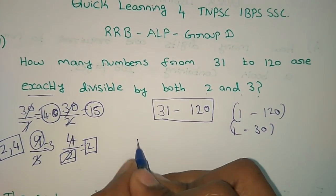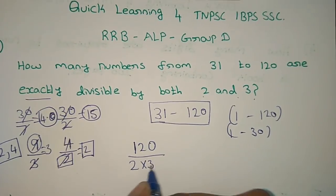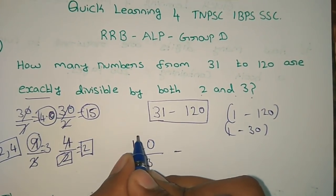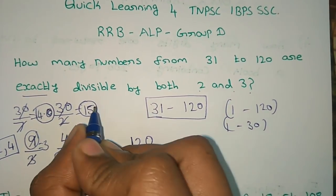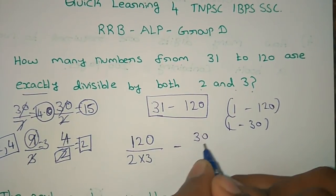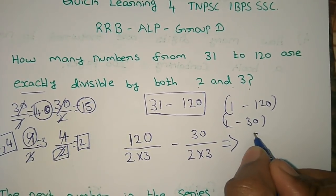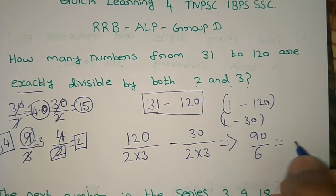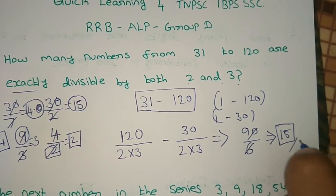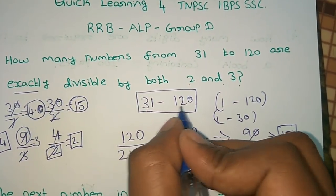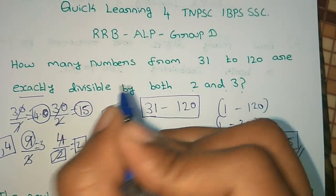We consider 1 to 3 which is negative. Since we get 80, we are all divided by 80. So 30 divided by 2 into 3 — if you cancel this again, it's 15. So this is the answer. If you have 31 to 120, there are 15 numbers that are divisible by both 2 and 3.